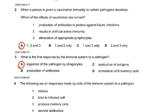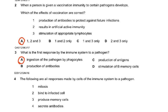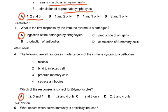When a person is given a vaccination, immunity to certain pathogens develops. Which of the effects of the vaccine are correct? Production of antibodies to protect against future infections results in artificial active immunity, because a vaccine is something artificial — you gave dead or weakened or attenuated pathogens — and stimulation of appropriate lymphocytes. The answer is all three: one, two, and three.